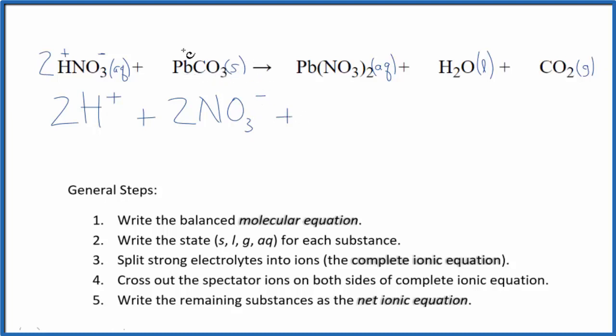This lead carbonate is a solid, so we don't split those apart in net ionic equations. Just write lead carbonate, PbCO3. These are the reactants, now for the products.